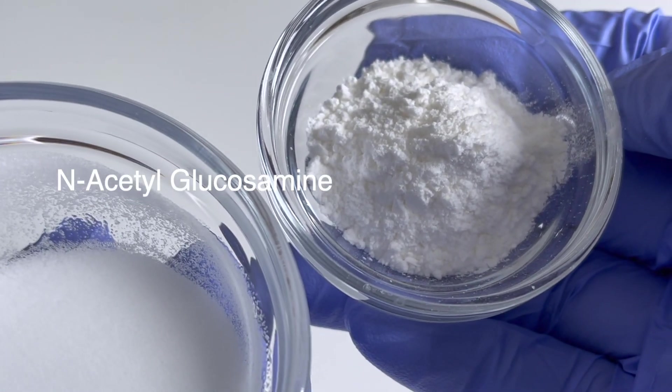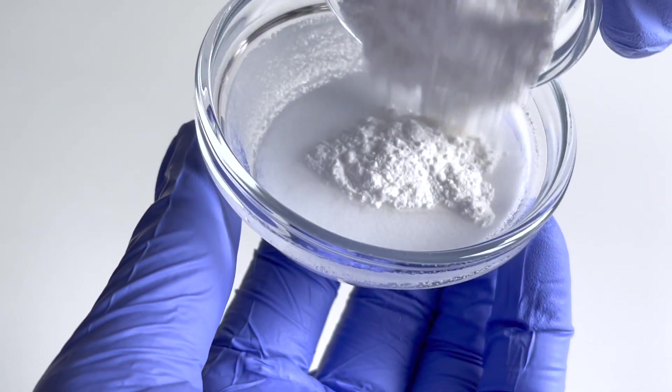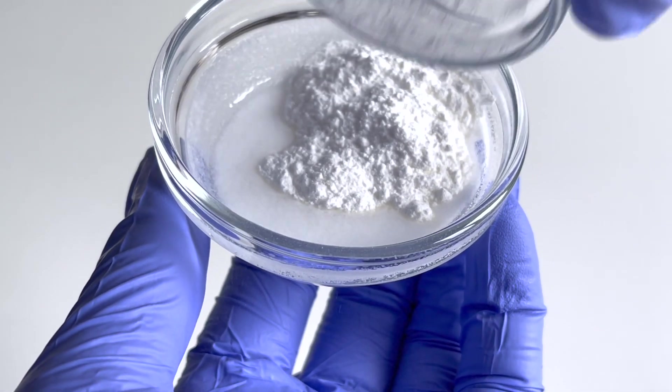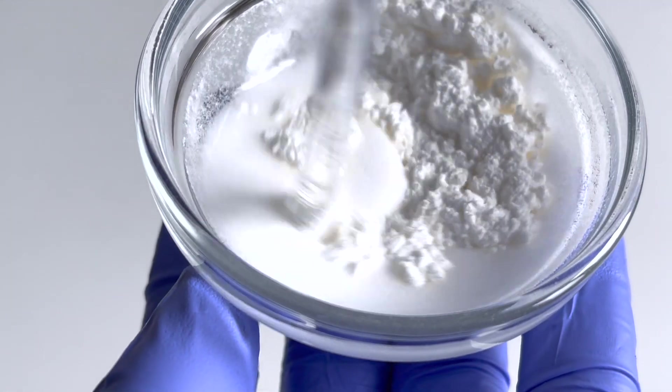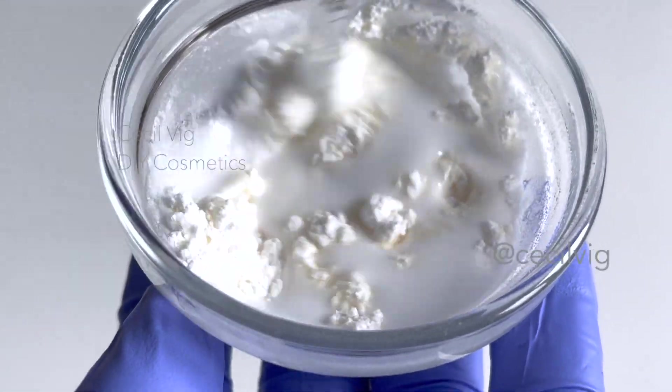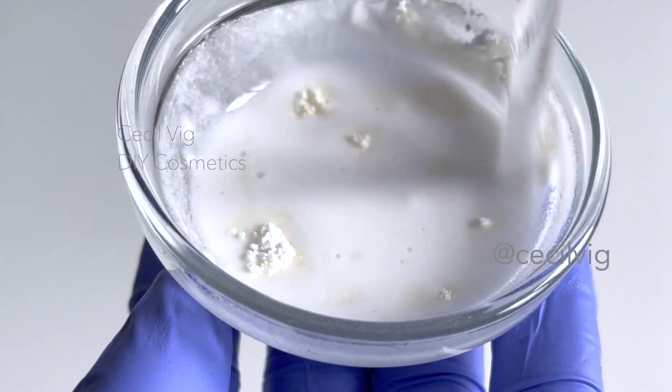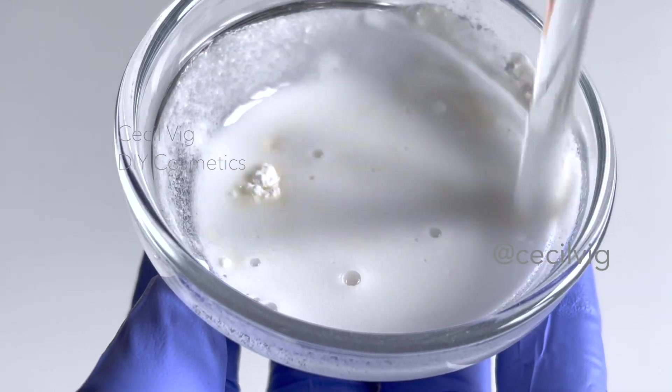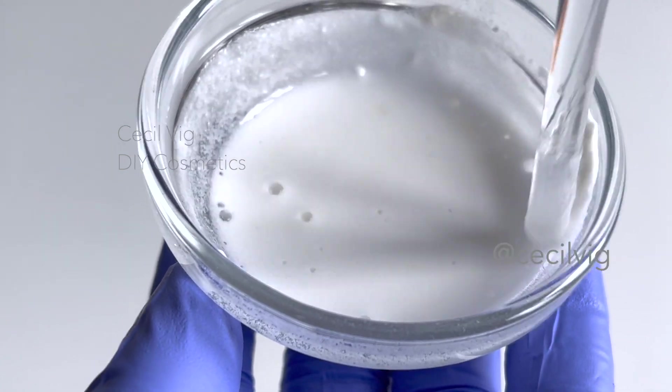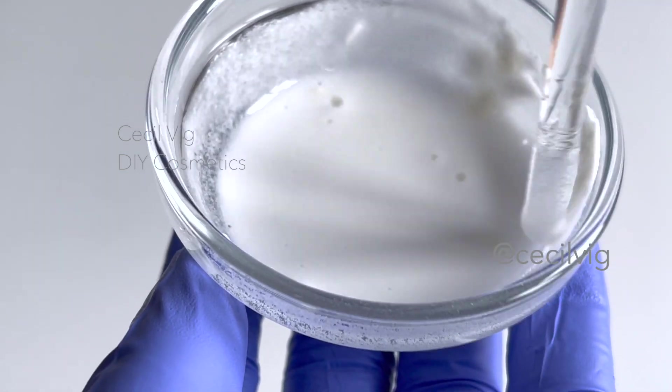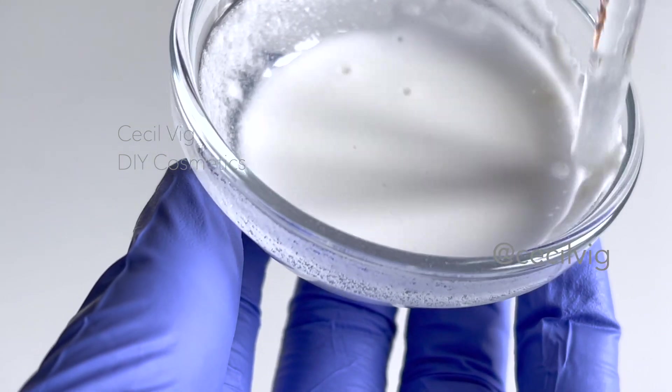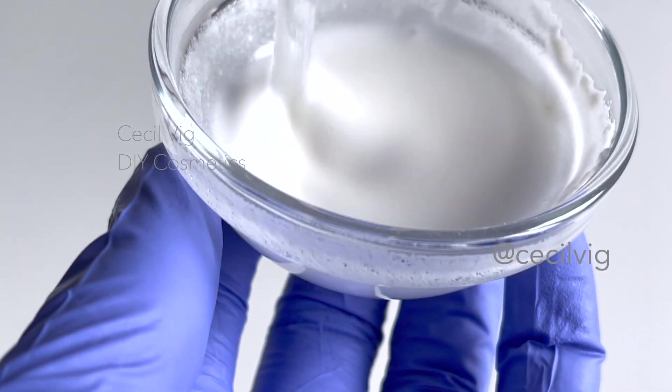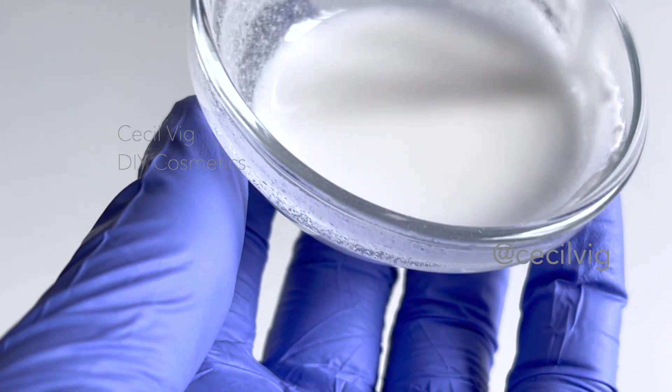After mixing, we add N-acetyl glucosamine to the niacinamide and mix well. N-acetyl glucosamine has been shown to reduce hyperpigmentation and can be combined with niacinamide to further increase its ability to reduce hyperpigmentation. N-acetyl glucosamine is an amino sugar that has skin exfoliating properties similar to alpha and beta hydroxy acids but without the irritation.